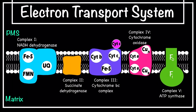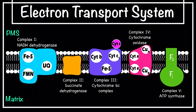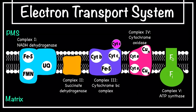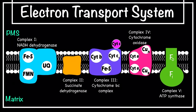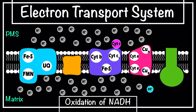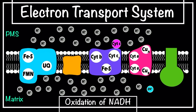Several different electron carriers are also involved with these enzyme complexes. Some of these electron carriers are NAD (nicotinamide adenine dinucleotide), flavoproteins like FAD and FMN, cytochromes — which are proteins having iron-containing heme groups — iron-sulfur proteins, and ubiquinone, also called coenzyme Q.